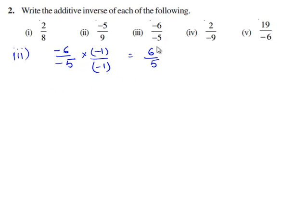Now we shall find the additive inverse of 6 by 5. For every rational number a by b, there exists another rational number c by d such that a by b plus c by d gives 0 which is equal to c by d plus a by b.